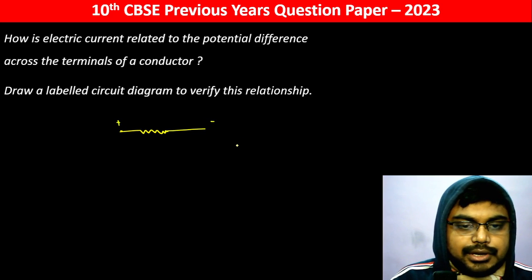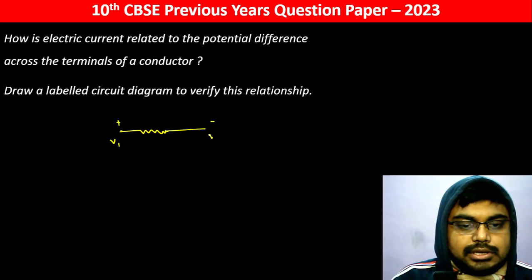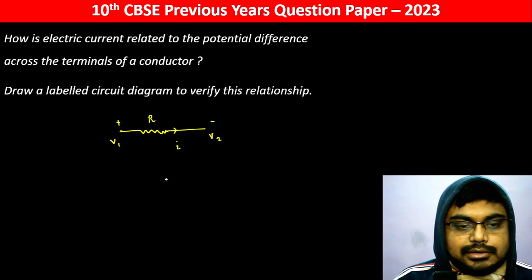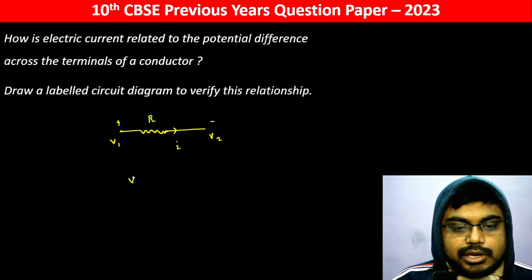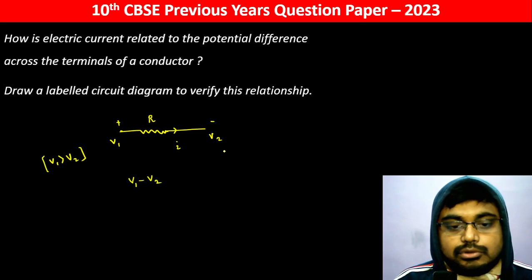Positive terminal. Potential difference. Here is V1 and here is V2. This is higher potential. V1 is greater than V2. Current flows from higher potential to lower potential.